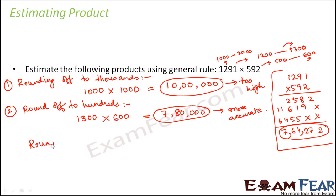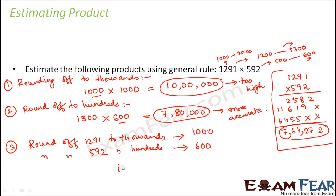Let's say that in a third scenario, let us round off 1291 to thousands and let us round off 592 to the nearest hundreds. When you round off 1291 to thousands place, this would be 1000. When you round off 592 to hundreds, this would be 600. So what would be the product in this case? It would be 1000 into 600, which would be 600,000.